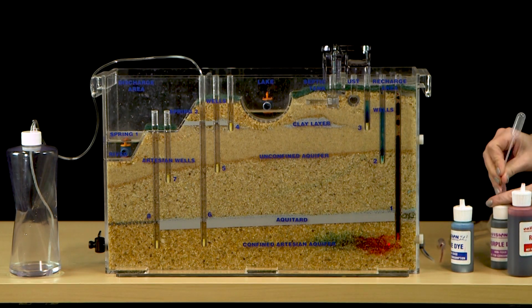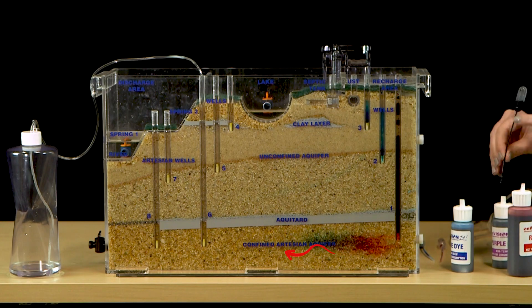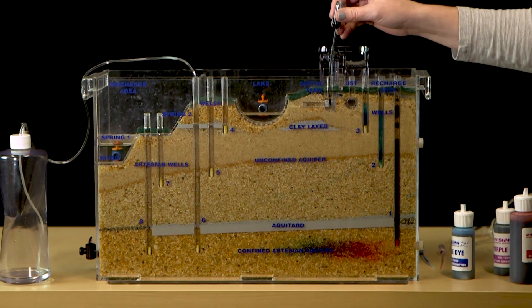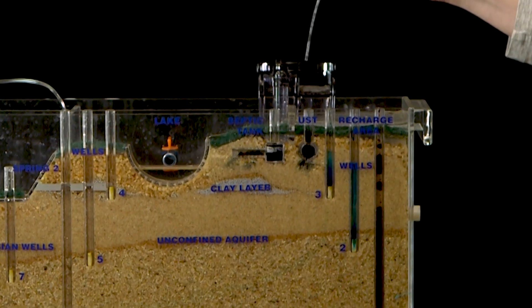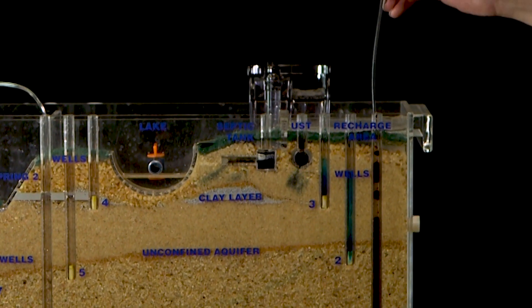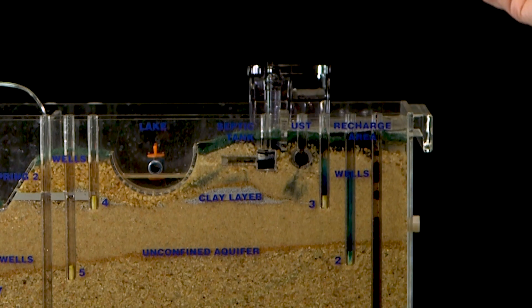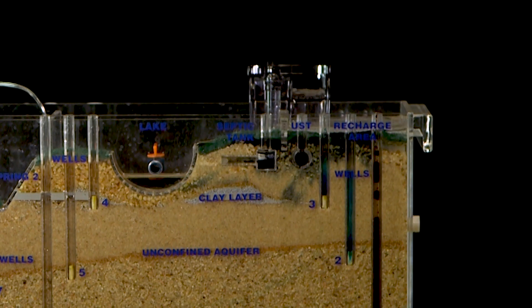This will create a clearly visible dye plume that will move toward the left side of the model. You can use different colors of dye in the septic tank, the leaking underground storage tank, or even directly on the ground to illustrate other sources of contamination that could enter groundwater.